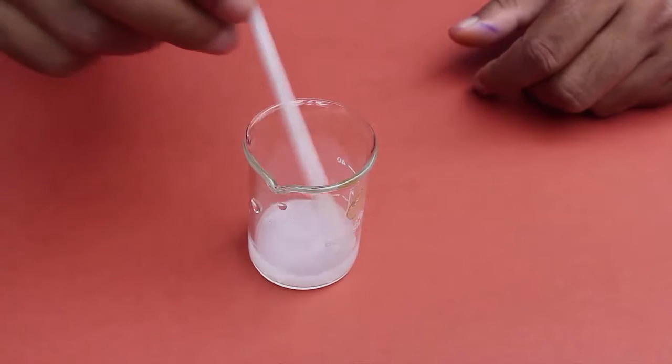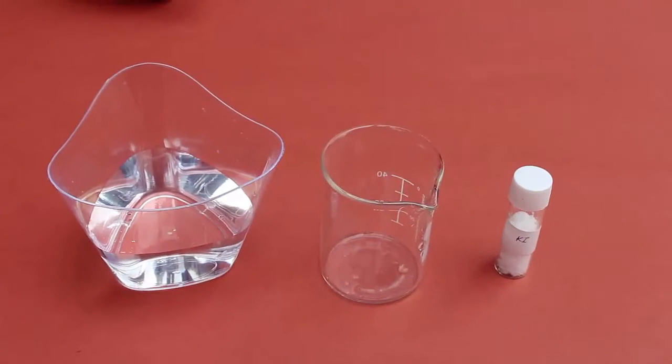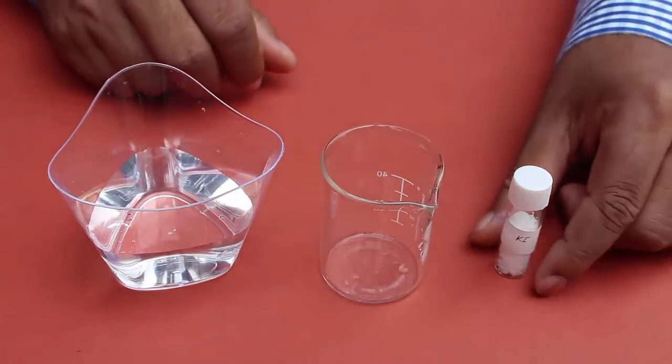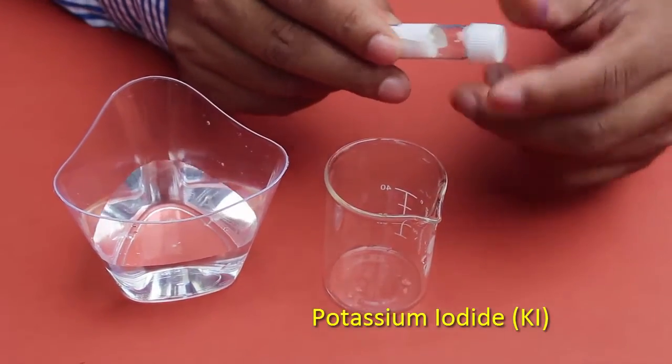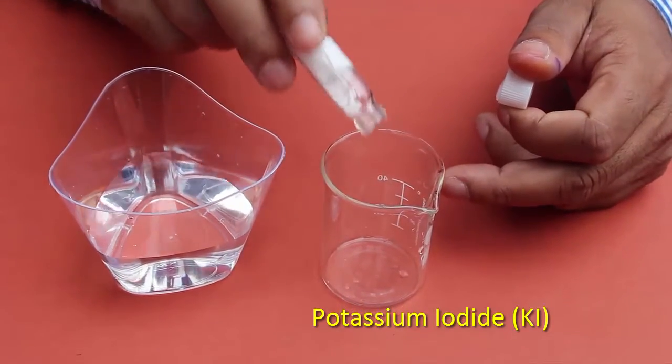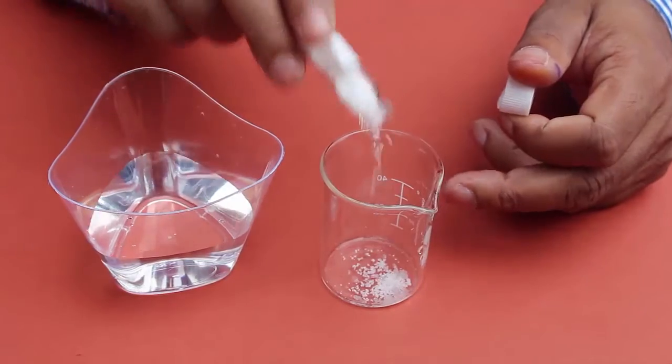This is saturated solution of lead acetate. Now we are going to prepare a solution of potassium iodide. This is the crystal of potassium iodide, so potassium iodide is taken into an empty beaker.